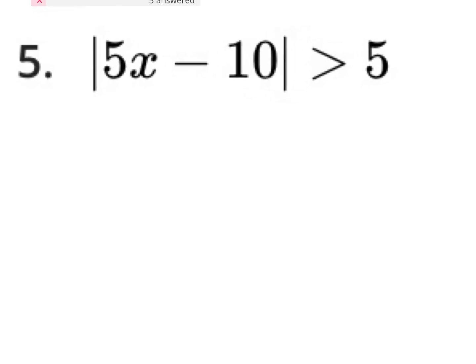When solving an absolute value inequality or equation, you have to first make sure it's isolated. That means if you had a times two, you'd have to divide by two. Or if you had a minus three, you'd have to add three. But we don't have that — it's already isolated for us. So once it's isolated, you can jump right into your positive and negative situations.